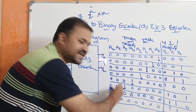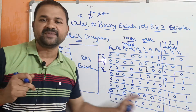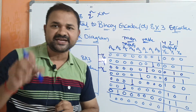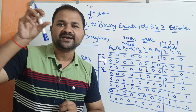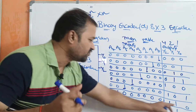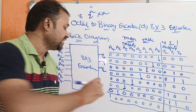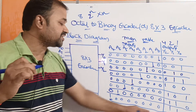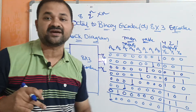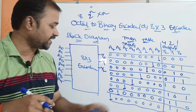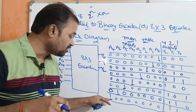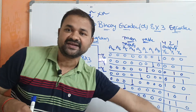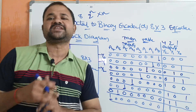Next, a6 is active and remaining bits are 0. We get the output as decimal 6 in binary: 110. Next, a7 is active and all remaining bits are inactive. We get the output as decimal 7 in binary: 111.